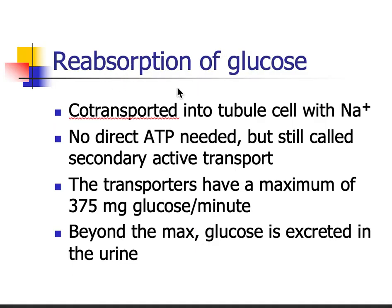Reabsorption of glucose: glucose is co-transported out of the filtrate into the tubule with sodium. You don't use ATP for that step, but it's called secondary active transport because the very next step does use ATP for the sodium. We have a lot of glucose transporters and they're very fast, so under normal conditions a healthy individual will be able to reabsorb all of their glucose. The glucose transporters have a maximum of 375 milligrams of glucose per minute.